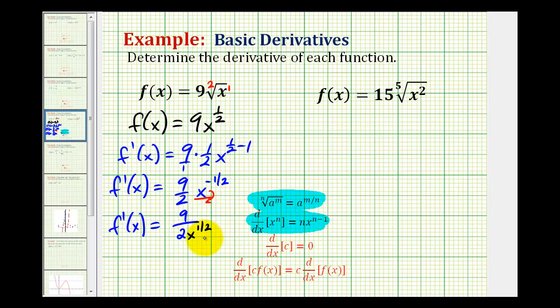And the last thing we want to do is rewrite this back in radical form since the original function was in radical form. And we already said before that the square root of x is equal to x to the power of one-half. So in radical form, this would be nine all over two square root of x. Notice how this one-half is only attached to the x, so we don't put the two underneath the square root.